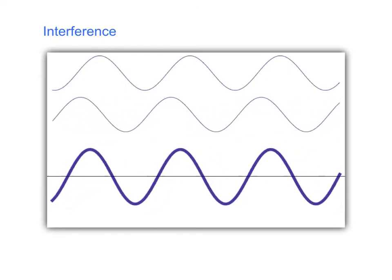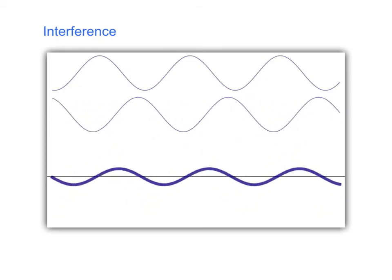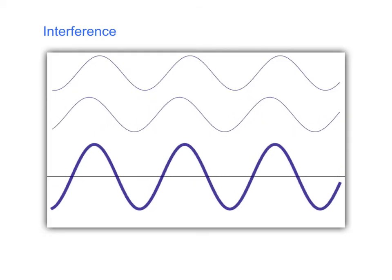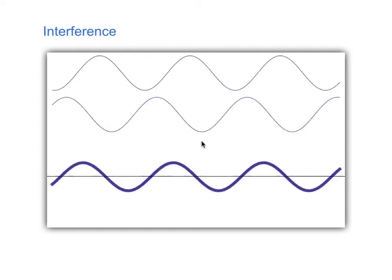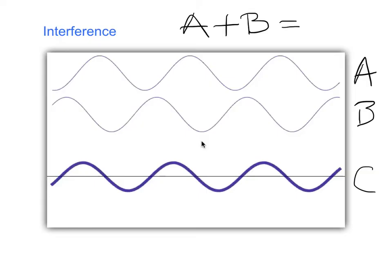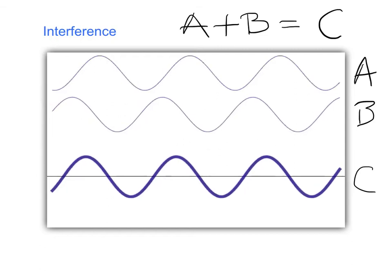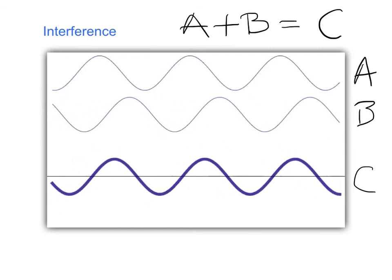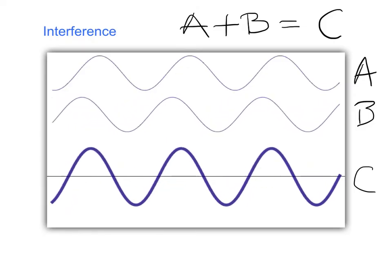Notice that sometimes the waves line up and make a bigger wave, and other times the waves are out of phase and they cancel out. To explore interference more carefully: the principle of superposition says if this is wave A and this is wave B, and they're going to be in the same place at the same time, then you simply add them — A plus B will equal wave C. So the wave at the bottom is the sum of these two waves as they mix together at all times.